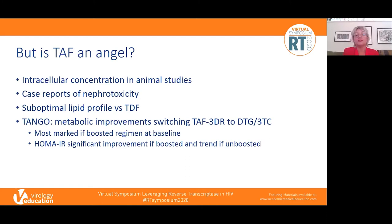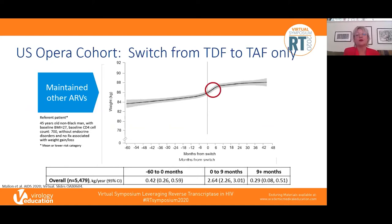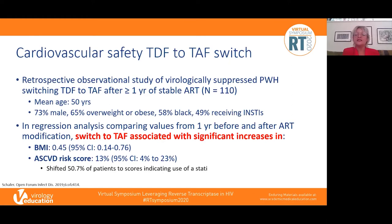This suggests possible differences between TAF/FTC and a lamivudine backbone. Weight has been a major story. Data presented by Paddy Mallon from the US OPERA cohort showed that people switching only the TDF-to-TAF component of their suppressive ART saw a sudden upswing in weight trajectory at the time of switch: an annualized weight gain of 0.4 kg pre-switch rose to 2.64 kg in the nine months surrounding switch, then plateaued at 0.3 kg per year.